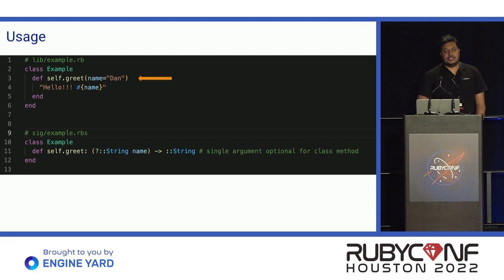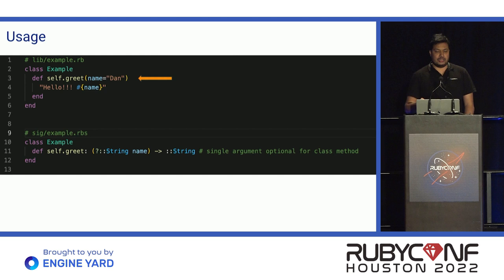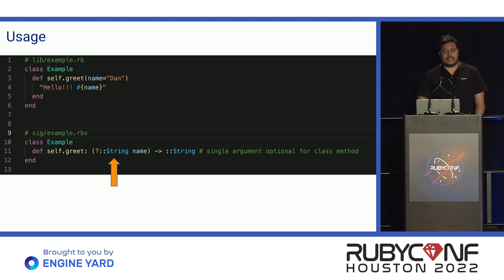Let's look at different kinds of functions and what RBS signatures we can write. In this example we have a method called greet that accepts an optional argument. For optional arguments — anything that can be nil — we use a question mark to define that the value can be nil. At line 11, the greet function accepts a string type argument which can be nil, so we can call greet without any argument. But if we do call greet with an argument, it must be a string only.